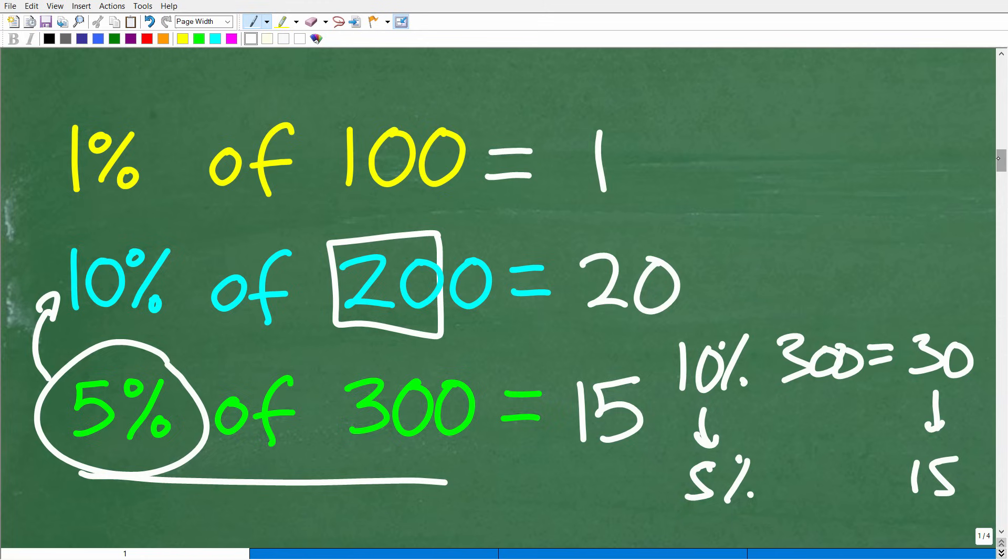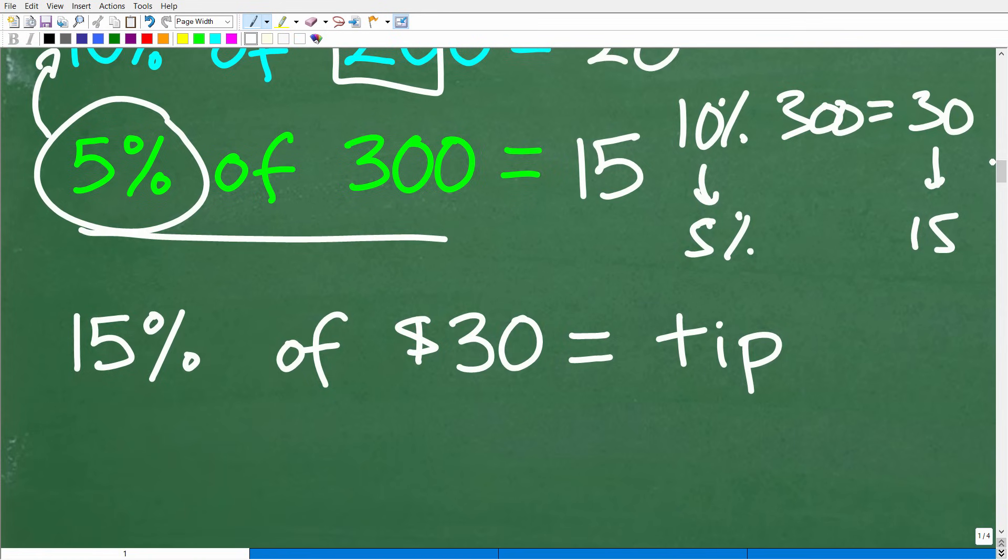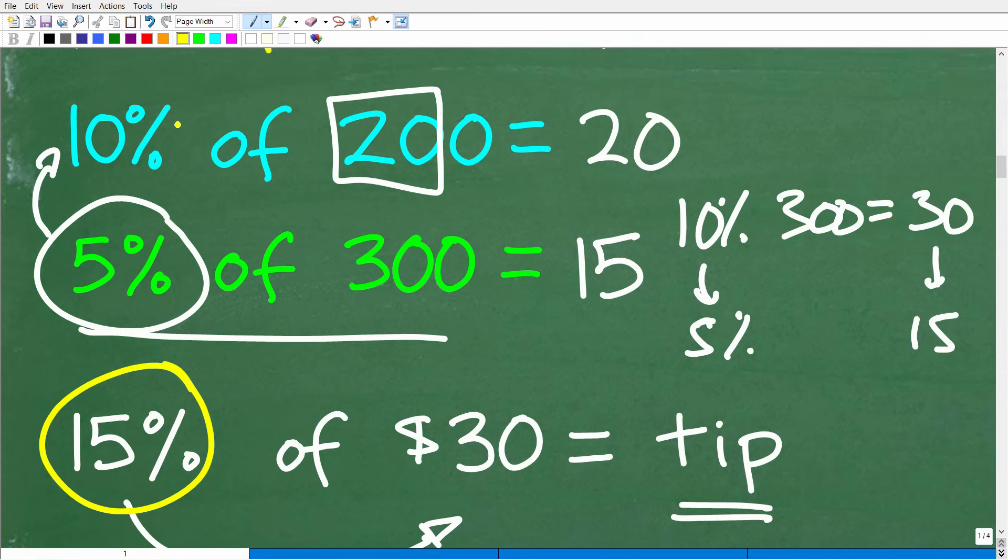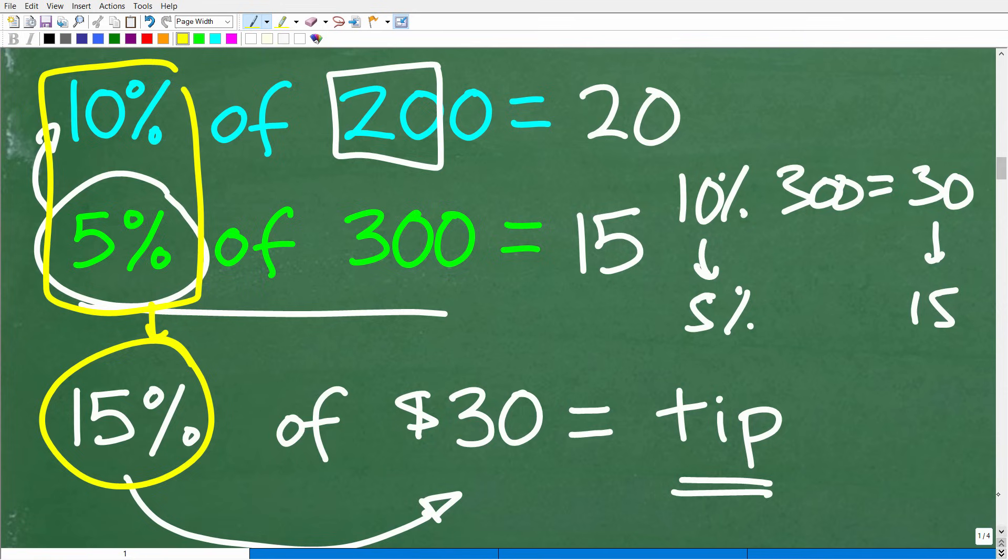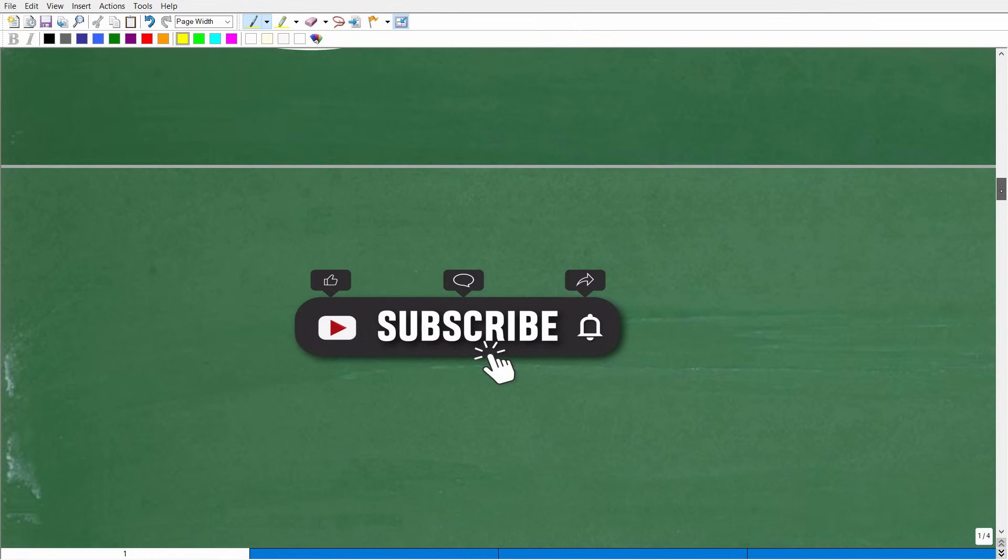Let's put this all together, and our question now is figuring out what 15% of $30 is. This is our tip. This 15%, we've been doing examples with 5% and 10%. So 5 plus 10 is 15. This is a little bit of a clue here on what to do.